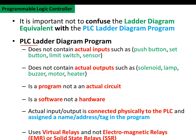What makes the PLC ladder diagram program different is the following: a PLC ladder diagram program does not contain actual inputs, neither actual outputs. It is purely a program, whereas a relay logic ladder diagram is an actual circuit with wirings. The PLC ladder diagram program is basically software, whereas a relay logic ladder diagram is hardware.